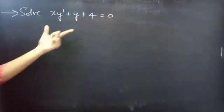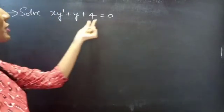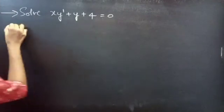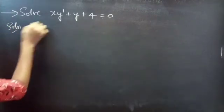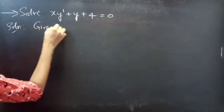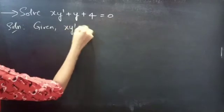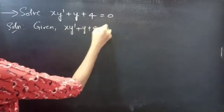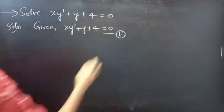Problem: solve x·y' + y + 4 = 0. Given differential equation: x·y' + y + 4 = 0, consider as equation 1.